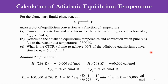Going to the problem statement, which is the calculation of adiabatic equilibrium temperature. For the elementary liquid phase reaction — which is a reversible reaction — one mole of A produces one mole of B. You have to make a plot of equilibrium conversion as a function of temperature. There are three steps: number one is to combine the rate law and stoichiometric table to write -rA as a function of K, CA0, X, and Xe. Xe is a new part here.